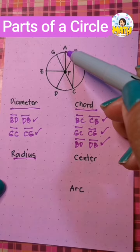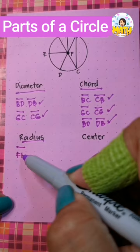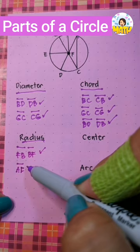Radius is a line segment from the center to a point on the circle. From the center, we can have FB or BF. We can also have EF or FA. It's the same.